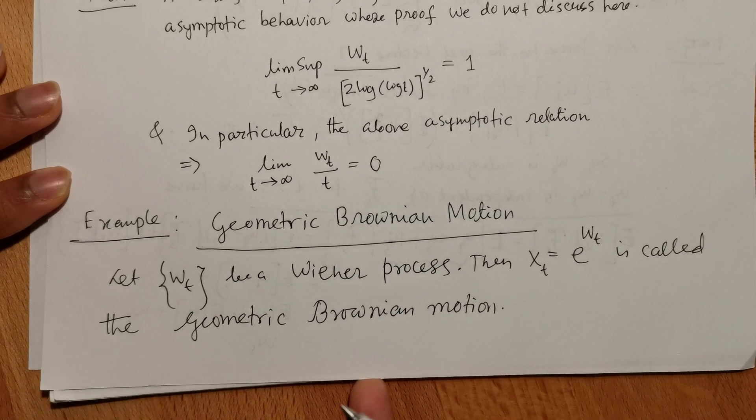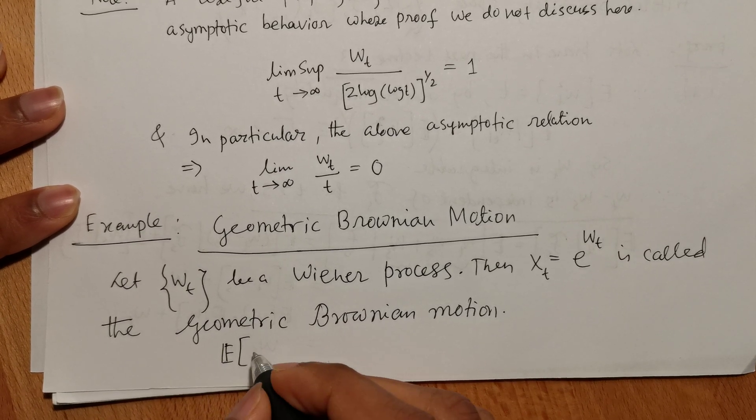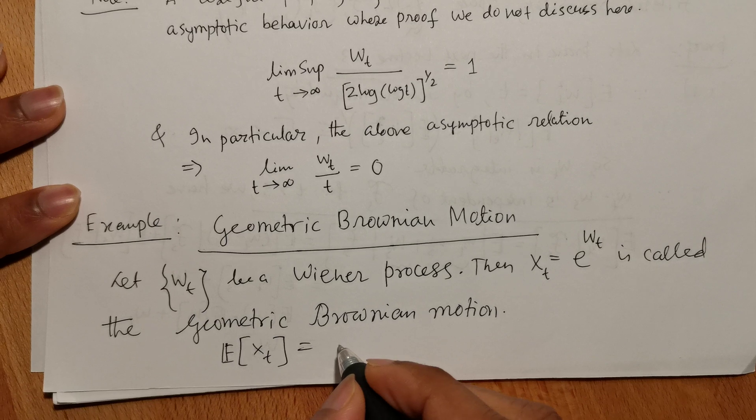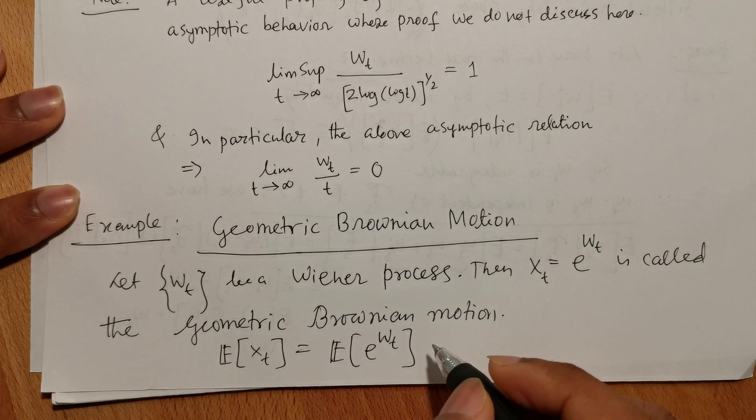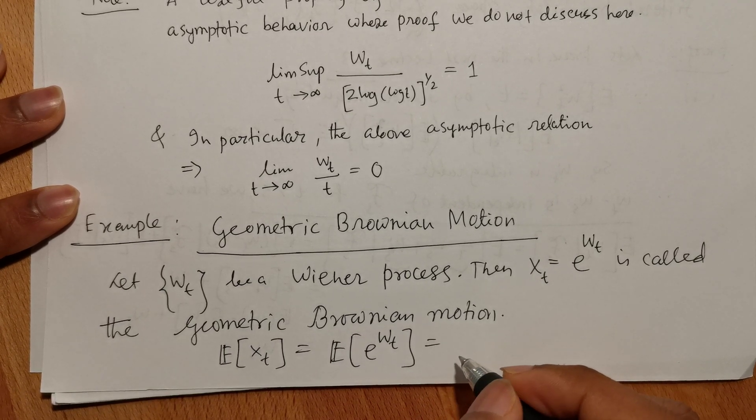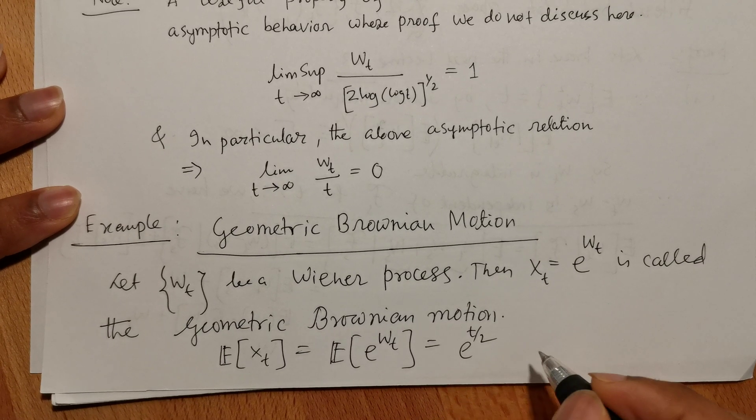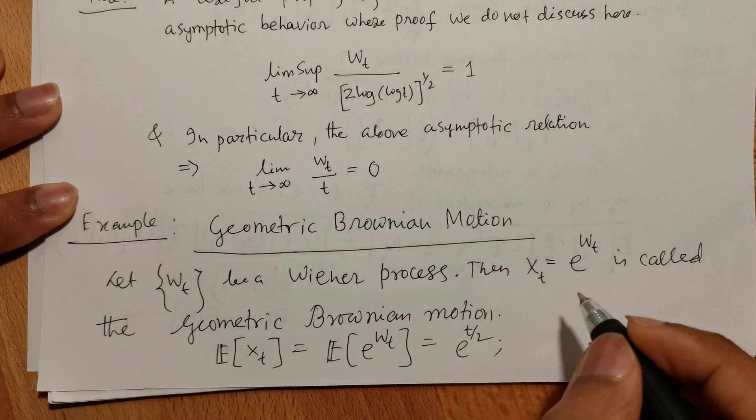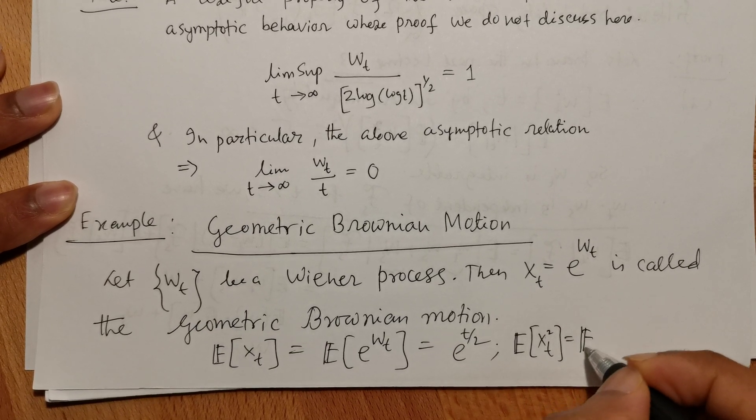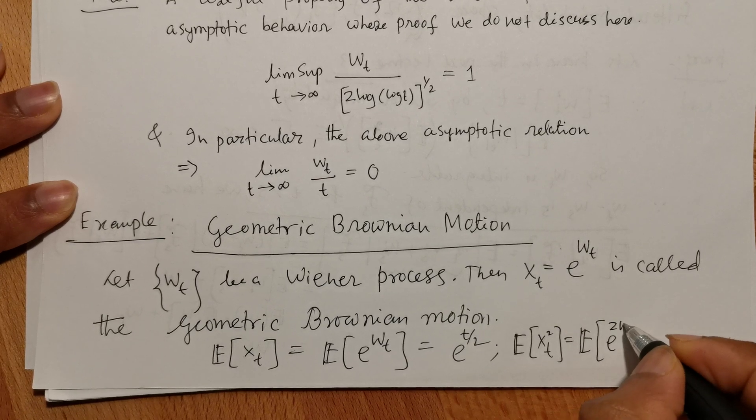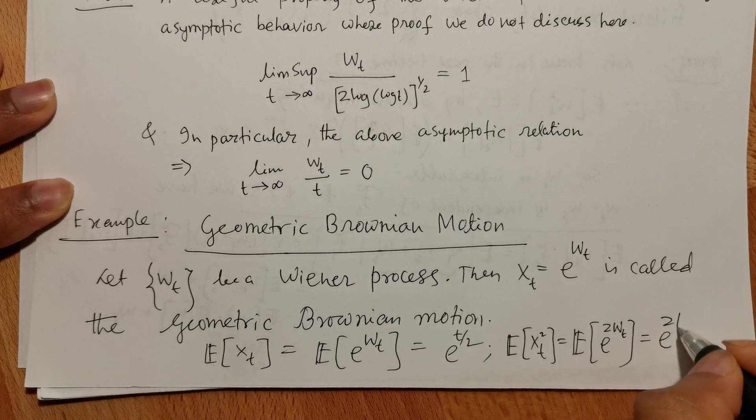And we can show that for this geometric Brownian motion, E[Xt] = E[e^Wt] equals e^(t/2), which can be shown using normal distribution property, and E[Xt^2] = E[e^(2Wt)] = e^(2t).